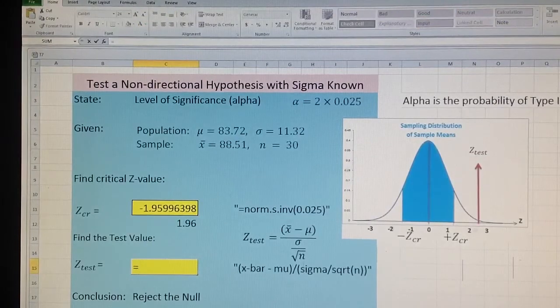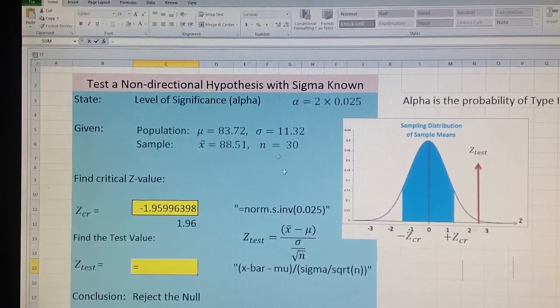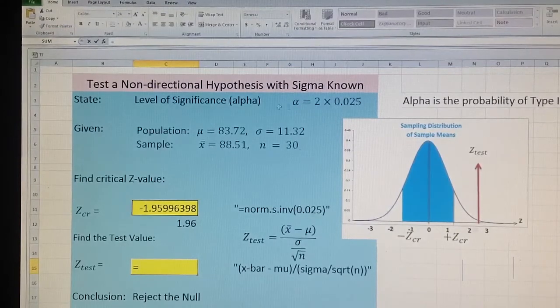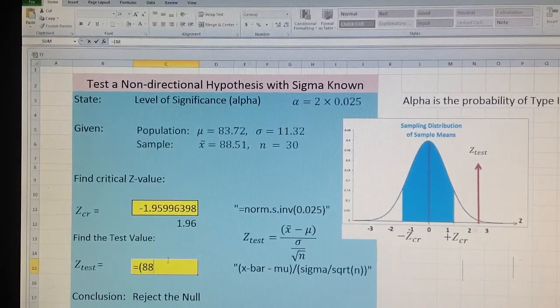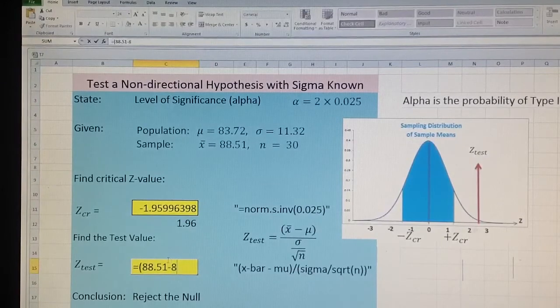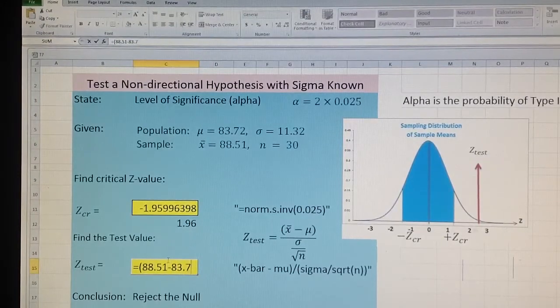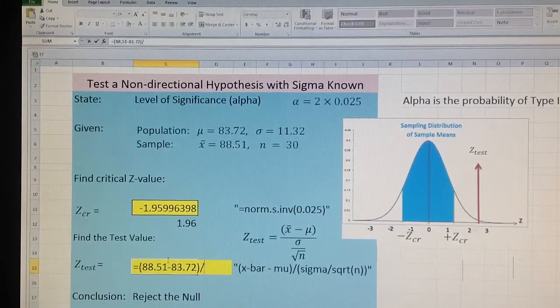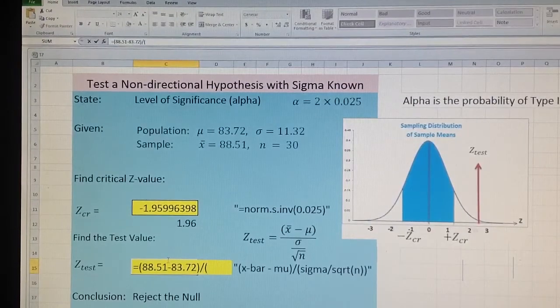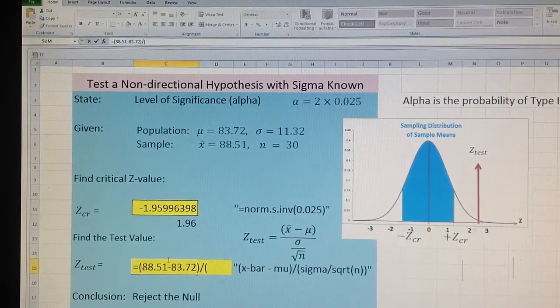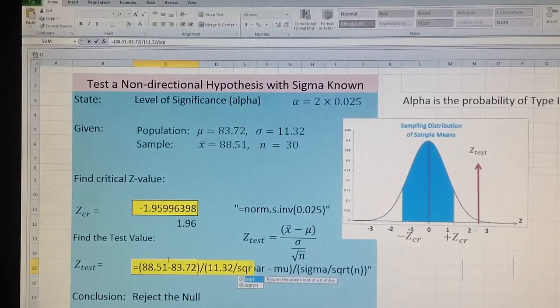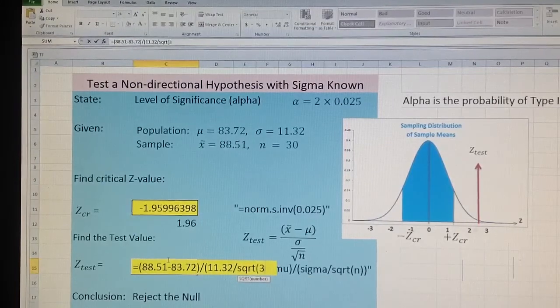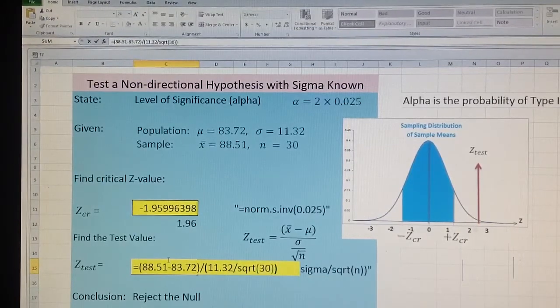Now pay attention to this formula. Now we will put this formula with this data in Excel. Equal sign x̄ is 88.51 minus 83.72. This is my numerator divided by—let's now open the parenthesis for the denominator—11.32 divided by SQRT of the number of individuals in my sample, 30.